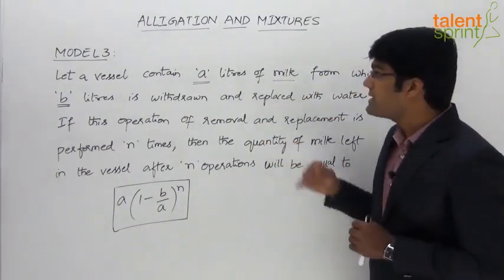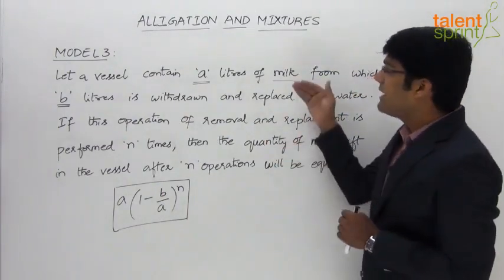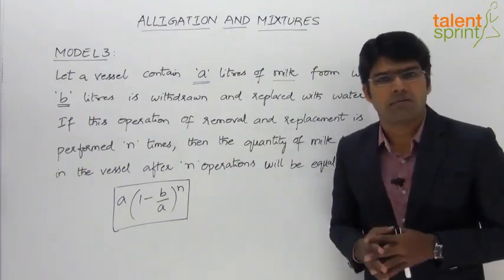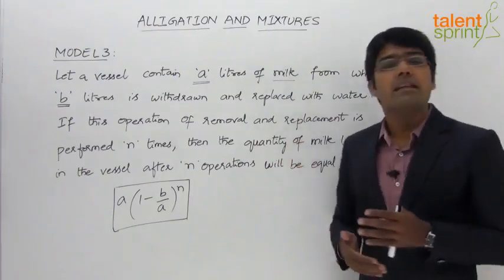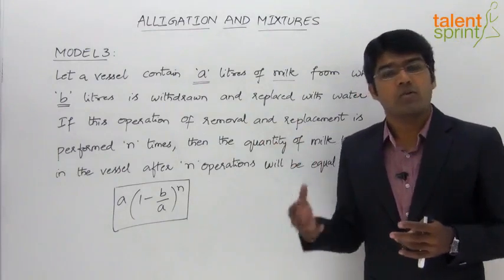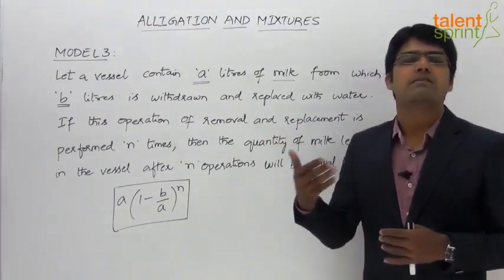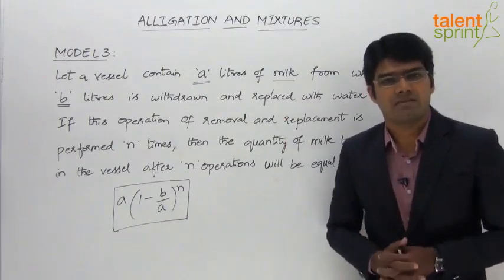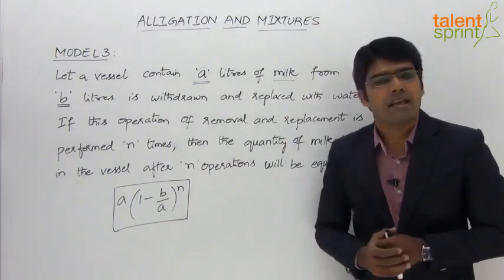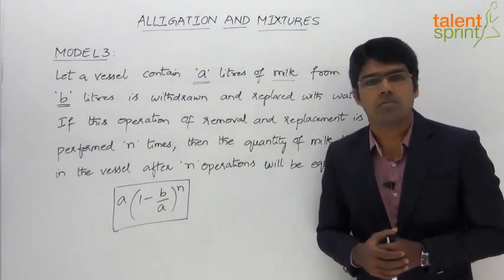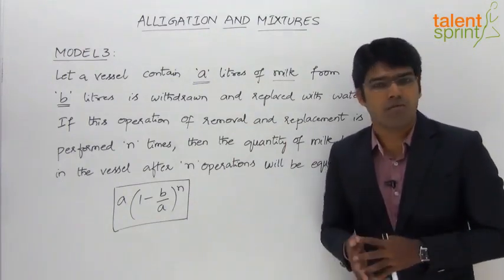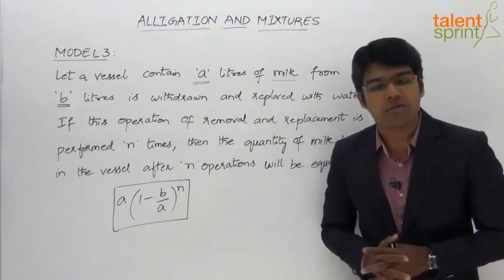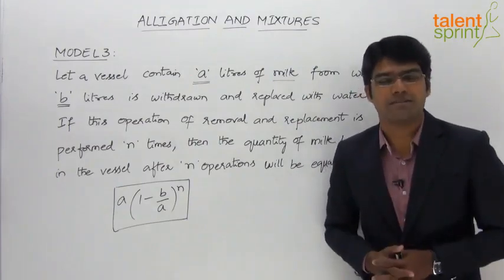In our case we have taken milk and water, but it can be any type of liquid. For example, initially we have A liters of alcohol out of which B liters is removed and replaced with water, and the operation is continued for n times. There again the formula can be taken as A into (1 minus B by A) whole to the power of n. So whatever the type of liquid, we can always use this formula to get the final quantity of the original liquid in the mixture after n operations.